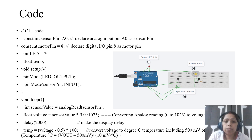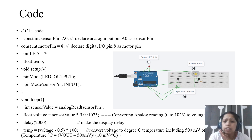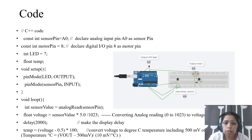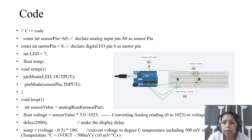I am declaring one variable for temperature. The temperature data will be collected from the temperature sensor in analog form and stored in this variable for future use. The data type is float, because the temperature may be 30.1, 30.2, 30.3, and so on.